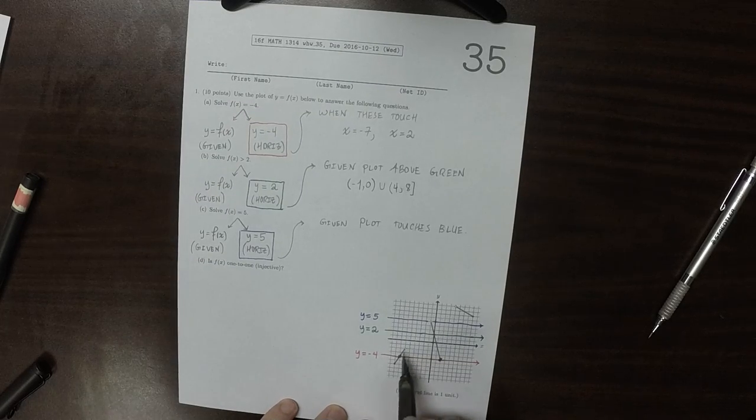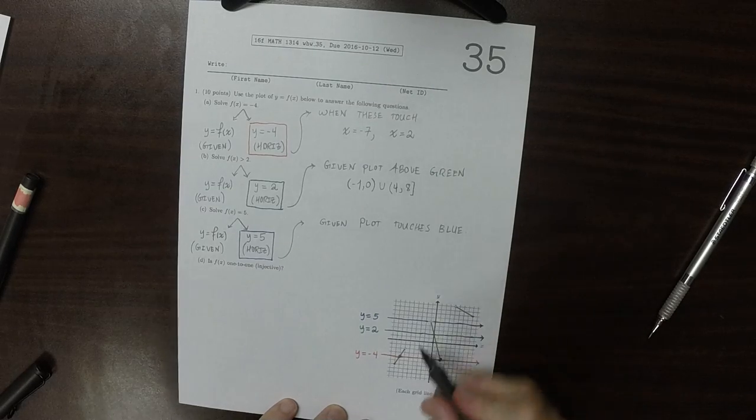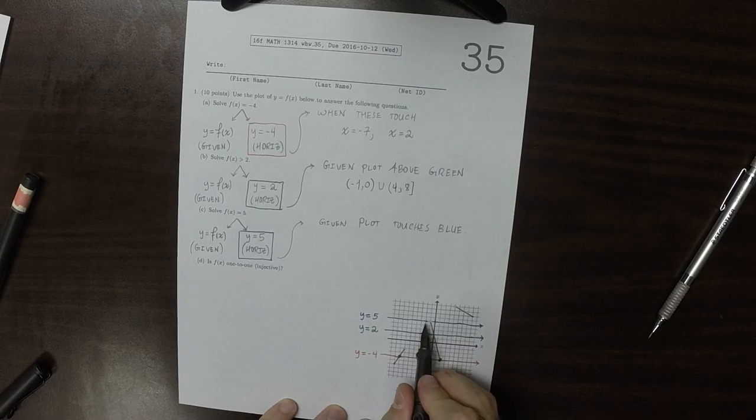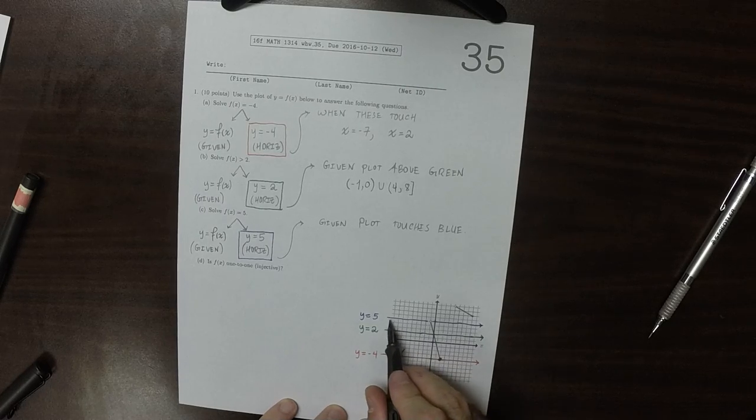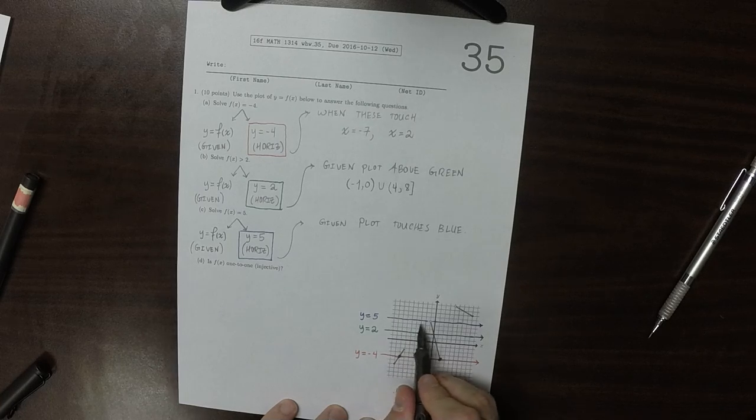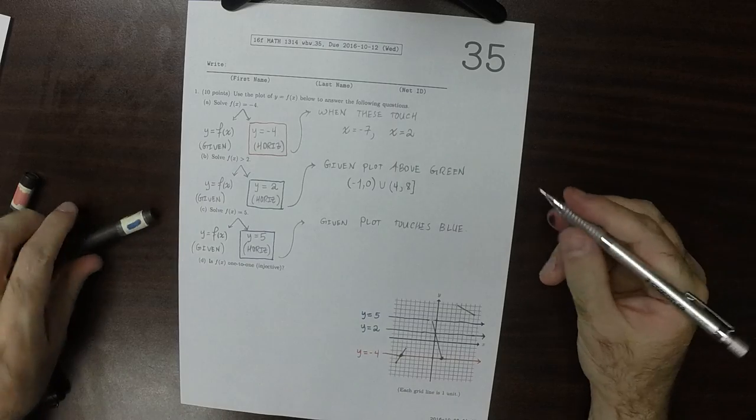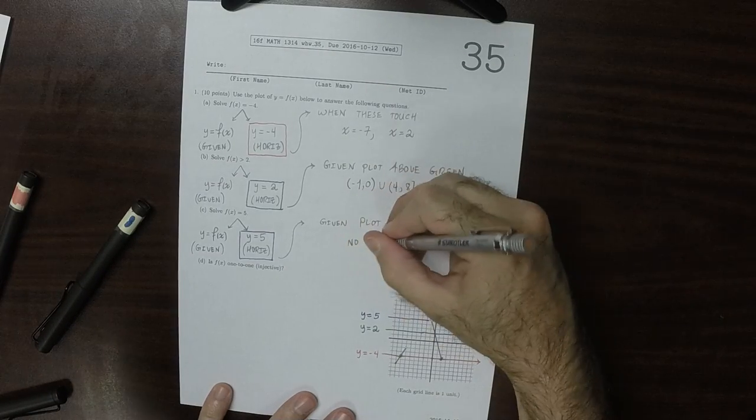So this piece doesn't touch the blue, and that piece doesn't touch the blue. They definitely don't. But this middle piece also does not touch the blue because the blue passes through that one open spot right there. So the blue goes right on by without touching it. So the correct answer to part c is that there's no solution.